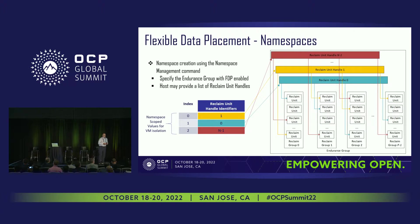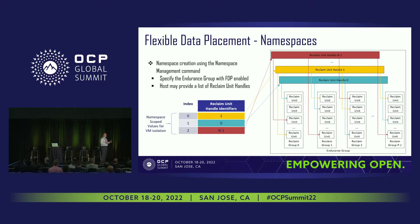As Chris mentioned earlier, today when you write an SSD to different namespaces, they could actually be written into the same location on the same super block and intermix the data. If you share a reclaim unit handle across two namespaces, you're saying you want that data mixed. But you can also say I don't want my namespaces to share a reclaim unit handle, and then you have data isolation at the reclaim unit handle level.